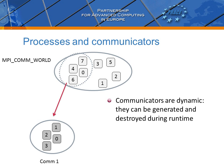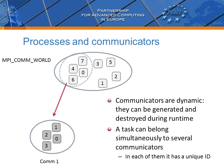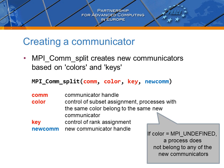Let us point out that communicators are dynamic — they are created and destroyed during program runtime. A task can simultaneously belong to several communicators, and in each communicator it has a unique rank ID. There are several approaches in MPI which allow you to define and create new communicators. We will present one of them here, based on the MPI_Comm_split routine, which takes an existing communicator and generates a set of new communicators by splitting them according to a provided criterion.